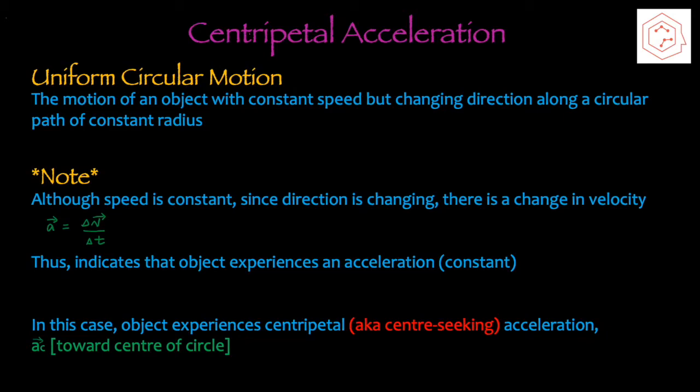The only definition in this section is uniform circular motion. This is the motion of an object with constant speed but changing direction. It travels along a circular path of constant radius. Note that although the speed is constant, the direction is changing, which means there must be a change in velocity.